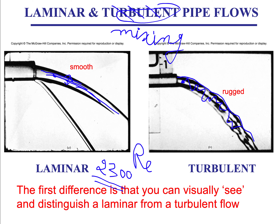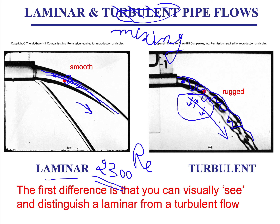From a Navier-Stokes perspective, in laminar flow we assumed unidirectionality and full development, but in turbulent flow a fluid particle can move in any direction. If we plot velocities to scale, we have a dominant mainstream convective velocity with a perturbation velocity riding on top of it — and it is that perturbation velocity that causes mixing.